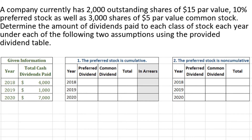Now let's look at a more in-depth example. A company currently has 2,000 outstanding shares of $15 par value 10% preferred stock, as well as 3,000 shares of $5 par value common stock. We are to determine the amount of dividends paid to each class of stock each year under each of the following two assumptions using the provided dividend table. The dividends paid in the years 2018 through 2020 are given. The first assumption is that the preferred stock is cumulative, and the second is that the preferred stock is non-cumulative.